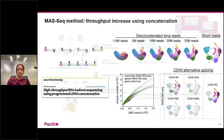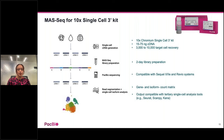PacBio has commercialized the MaSeq method for 10x single-cell 3-prime cDNA. It takes 15 to 75 nanograms of cDNA with a targeted cell recovery of 3,000 to 10,000 cells. From 10x cDNA to sequencing-ready library is two days of preparation. It is compatible with both SMRT Link 2E and Revio systems, and the SmartLink workflow produces gene and isoform count matrices compatible with tertiary analysis tools.